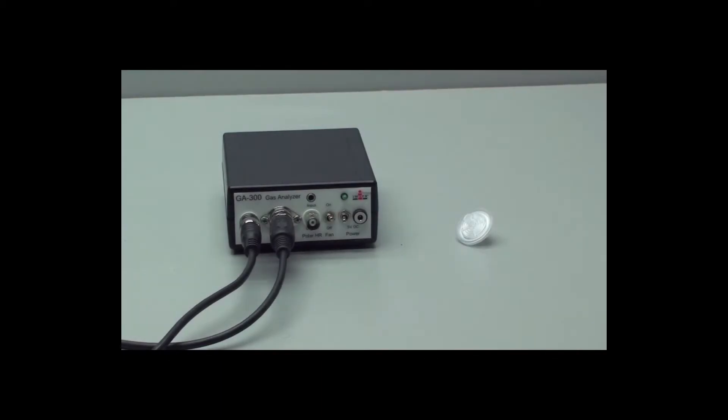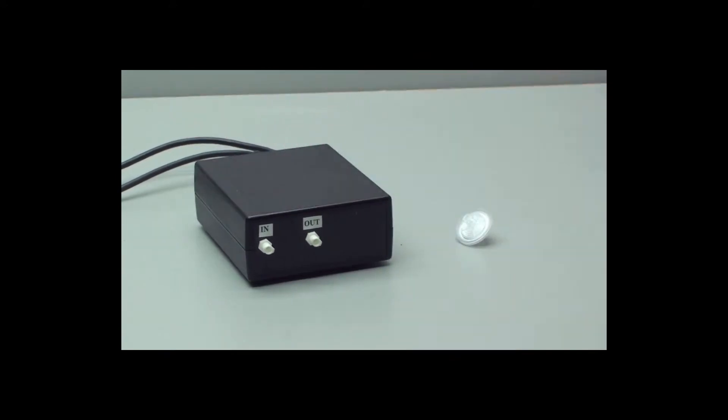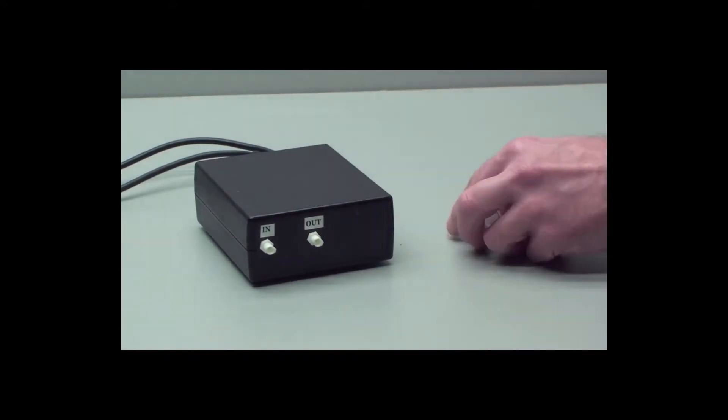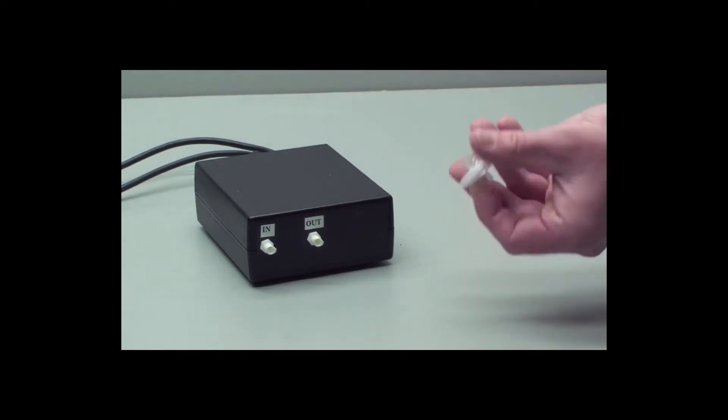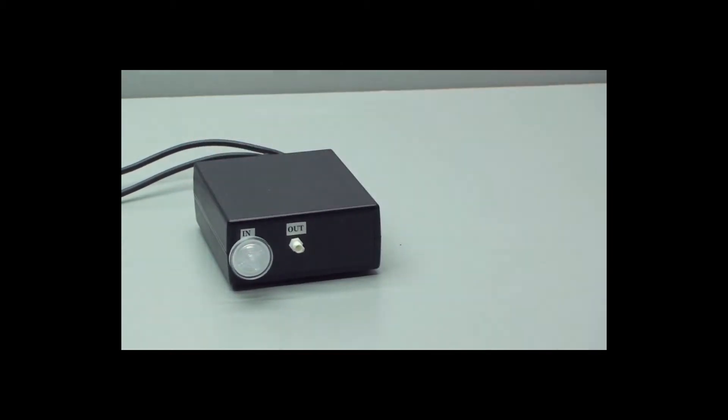Go to the back side of the gas analyzer. For the filter, take the lure end and that goes into the inlet of the gas analyzer. Don't over-tighten, snugly is fine.